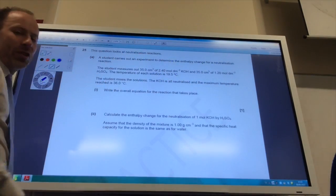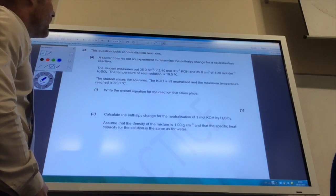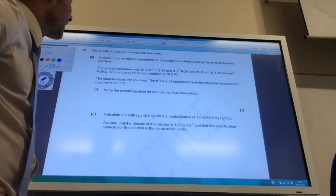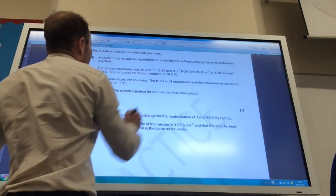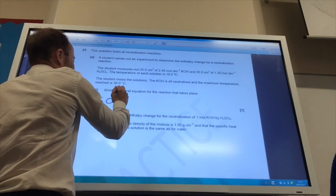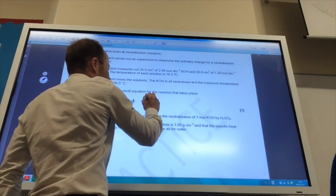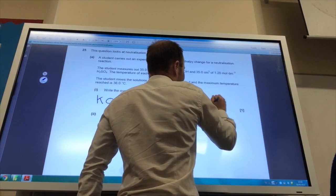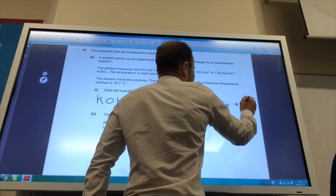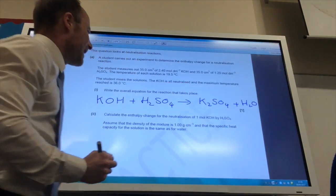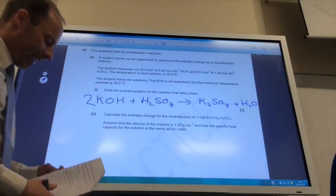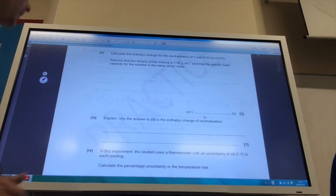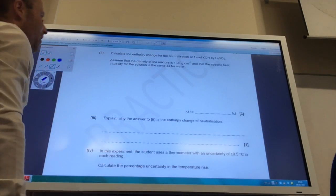So we're now on to neutralization reactions. We want to determine the enthalpy change for this neutralization reaction, and it wants me to write the overall equation for the reaction to take place. So what have I got? I have got potassium hydroxide, KOH, and that is reacting with H2SO4. So I've got my alkali, I've got my acid, so my salt is going to be potassium sulfate and I'm going to make water as well. And to get that to balance, I am going to need 2KOH and I will make 2H2O, like so.